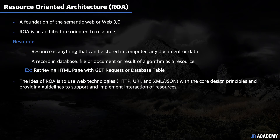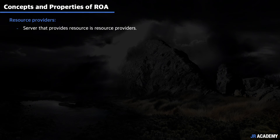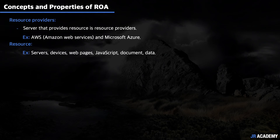The idea of ROA is to use basic, well-understood web technologies such as HTTP, URI, XML, and JSON, with core design principles providing guidelines to support and implement interaction with resources. The first property is the resource provider — someone needs to provide these resources, and examples include AWS and Microsoft Azure. The second is the resource itself, such as any server, device, web page, script, file, or document. Resources have a name and a unique address or path.